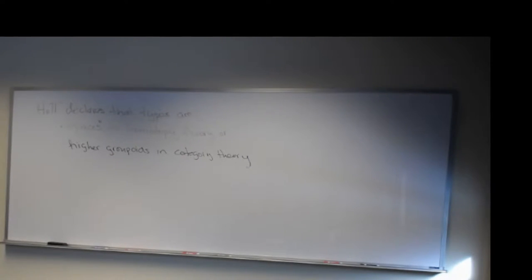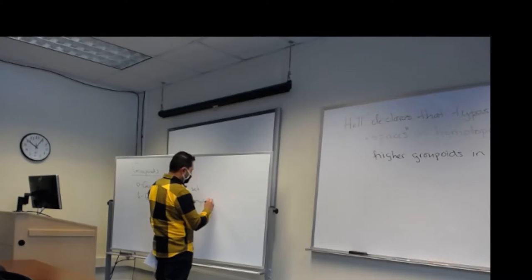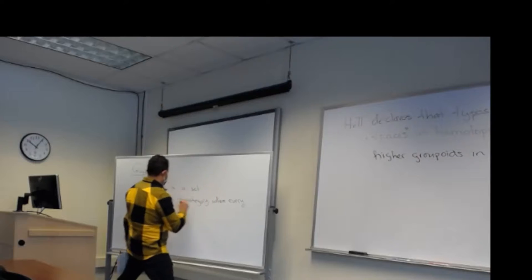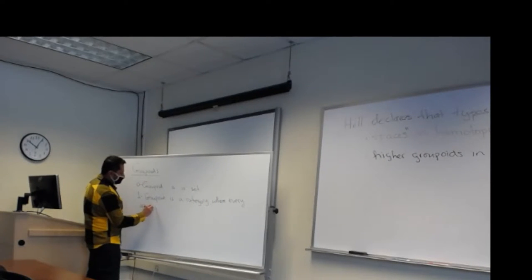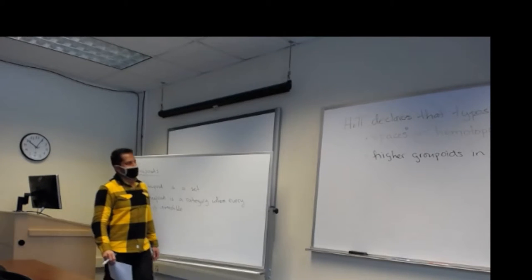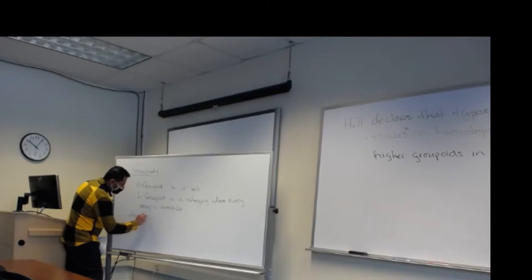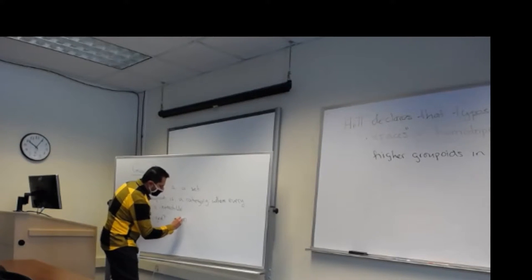So let's start with a zero-groupoid. A zero-groupoid is a set. A one-groupoid is a category where every morphism is invertible. And so we want to talk about higher groupoids — what's a two-groupoid? What's a three-groupoid? And all the way up to infinity groupoids.